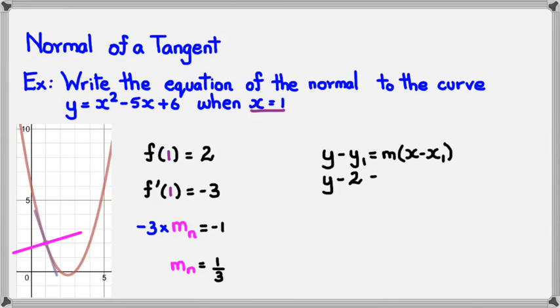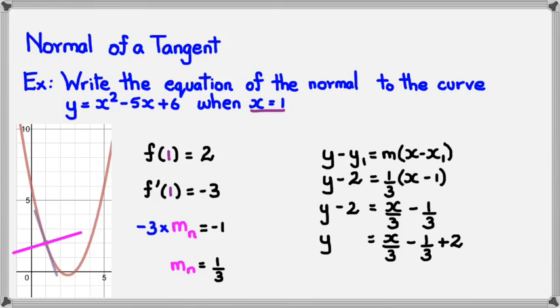So y - 2 equals, and of course the gradient this time we're looking at is the gradient of the normal, so it's going to be 1/3 multiplied by x - 1, because that's the x coordinate. So rearranging this, we're going to get y - 2 = x/3 - 1/3. And if we keep going, we should end up with y = x/3 + 5/3 as our equation for the normal.